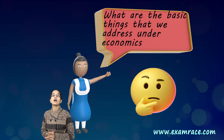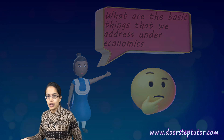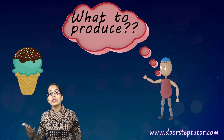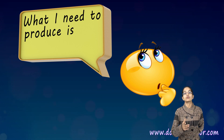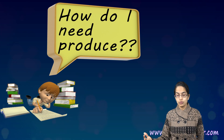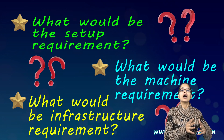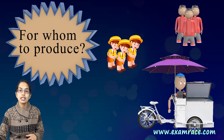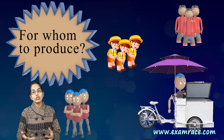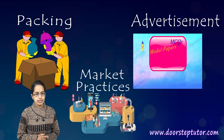The basic questions addressed under economics are: what to produce, how to produce, and for whom to produce. Using the ice cream example — what to produce means which ice cream to produce; if there is demand for vanilla but I produce strawberry, that's a mismatch. How to produce covers the machinery and infrastructure required. For whom to produce considers the target audience — say kids or teenagers — which then influences packaging, advertising, and marketing practices.